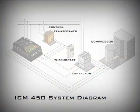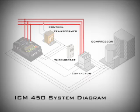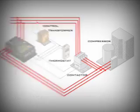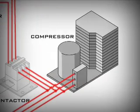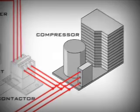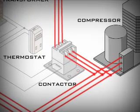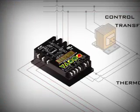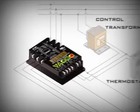With the ICM 450, your equipment is protected against power supply problems on both the line side and the load side. All power monitors check the incoming power, but most don't monitor the power at the compressor itself. So one of the most common causes of power supply problems — a malfunctioning contactor — gets completely overlooked.